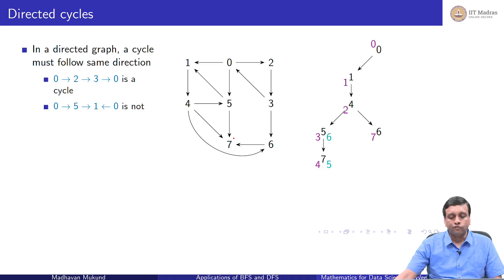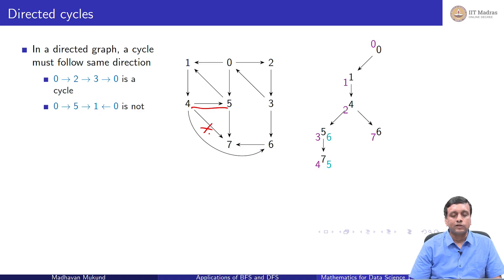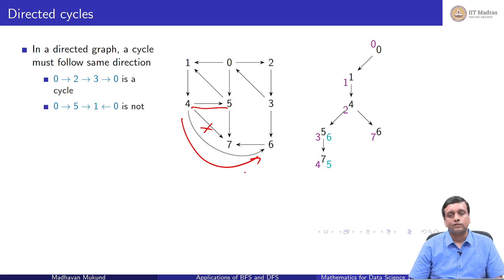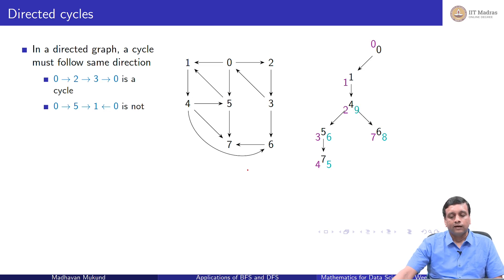Coming back to 4: we already explored 5, and 7 is already done. But there is a long edge from 4 to 6, so we enter 6 with pre number 7. From 6, the only option is 7, which is already seen, so we exit 6 with post number 8. We are done with 4, so we exit 4 with post number 9. We are also done with 1, so we exit 1 with post number 10, since 1 had only one outgoing edge to 4.